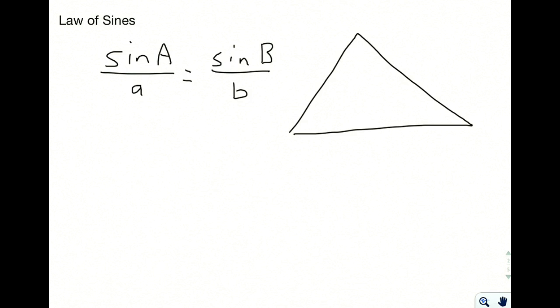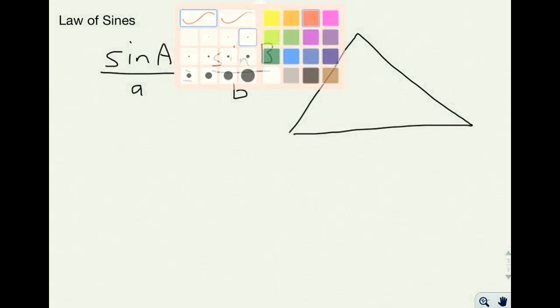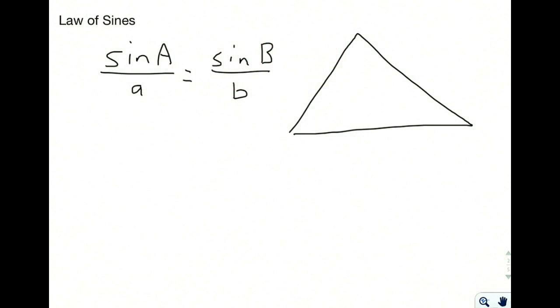The Law of Sines says that if you take any side and its opposite angle, such as, let's go ahead and label this diagram right here, and call this angle A. And if that's angle A, then we're going to call this side over here little a.